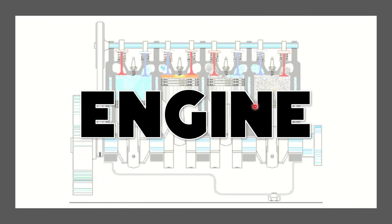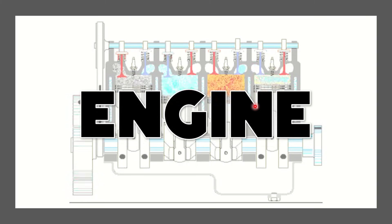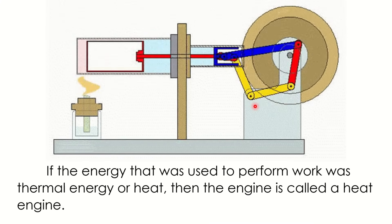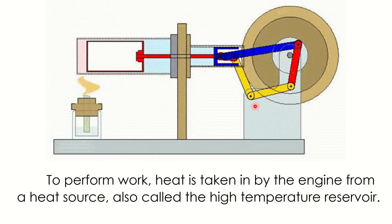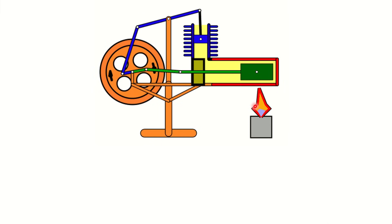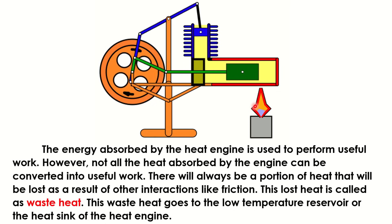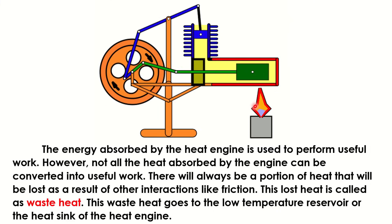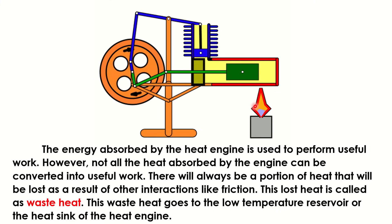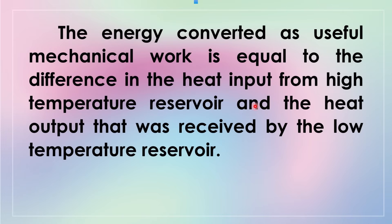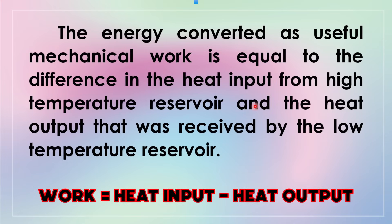Now let us talk about engines. One such object that allows us to produce mechanical work from a type of energy is called an engine. If the energy used to perform work was thermal energy or heat, then the engine is called a heat engine. To perform work, heat is taken in by the engine from a heat source, also called the high temperature reservoir. The energy absorbed by the heat engine is used to perform useful work. However, not all the heat absorbed by the engine can be converted into useful work — there will always be a portion of heat that will be lost as a result of other interactions like friction. This lost heat is called waste heat, and it goes to the low temperature reservoir or the heat sink of that heat engine.